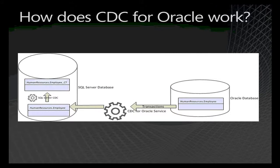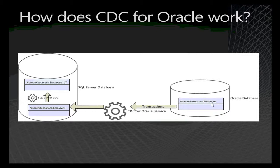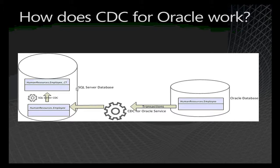The CDC for Oracle leverages the native CDC functionality that is available in SQL Server. It essentially creates SQL Server mirror tables of the tables located on your source Oracle database. For instance, it creates a mirror table called humanresources.employee from the source table called humanresources.employee on your source Oracle database. It then enables SQL Server CDC on those mirror tables, syncs the transactions between the source Oracle database to the destination SQL Server database, and uses SQL Server CDC to capture changes from the mirror tables. You can thus consume the changes from the change tables created by SQL Server CDC just as any other change table from a SQL Server database.